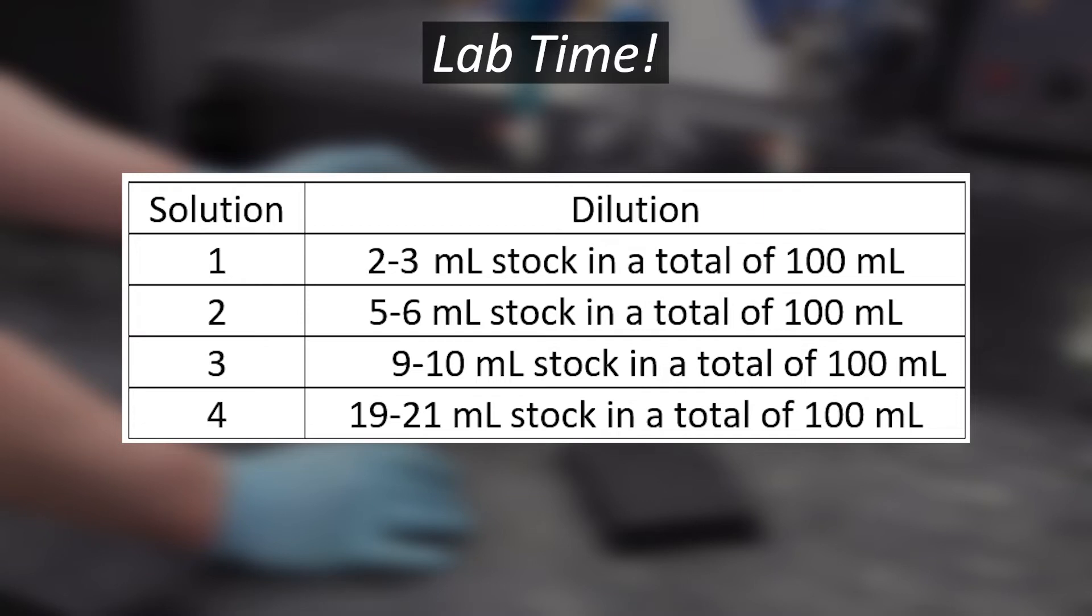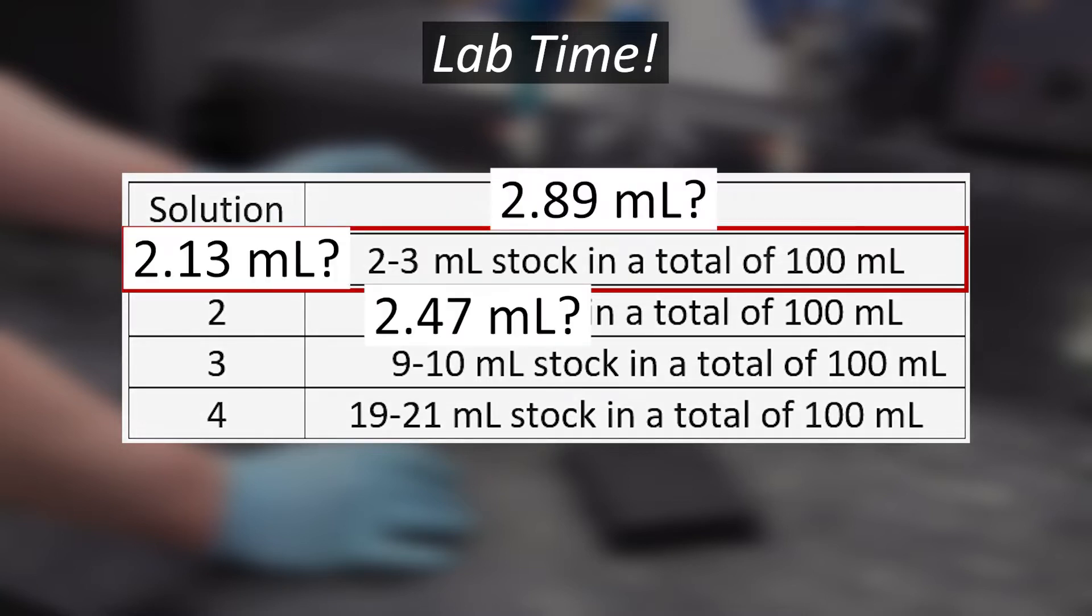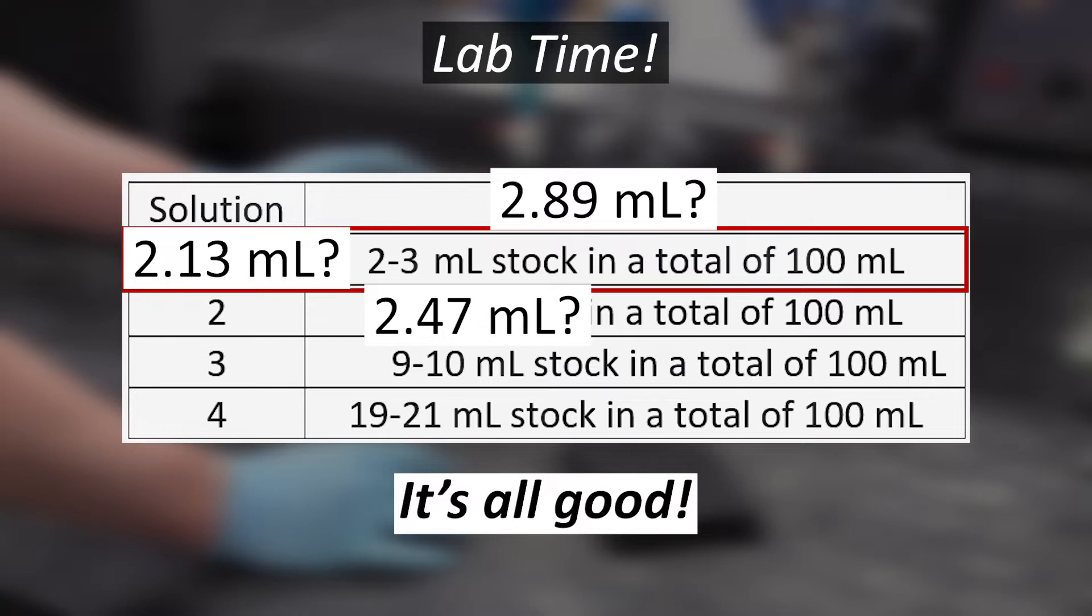As you can see, this table gives you ranges of volumes instead of specific, exact quantities. The first solution, for example, says it needs 2-3 mils of stock. What this means is you can add anything in that range and your solution will still be good. The nice thing about this is you don't have to worry about dispensing a certain specific volume of stock for each solution.